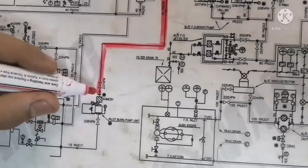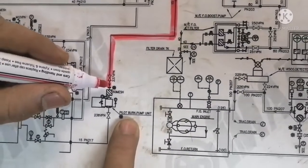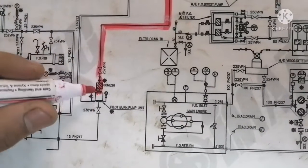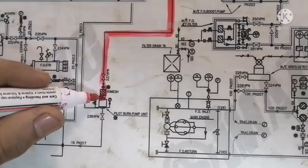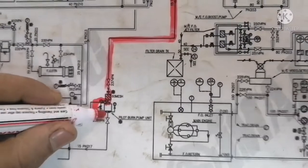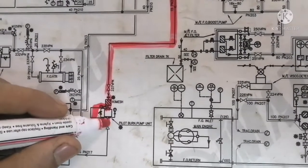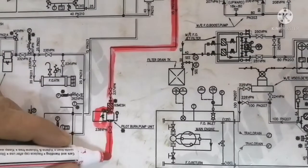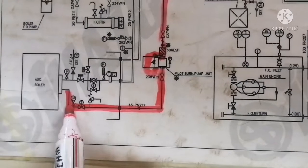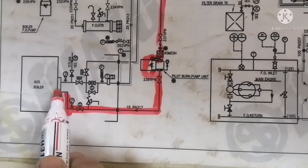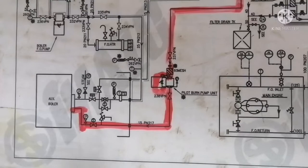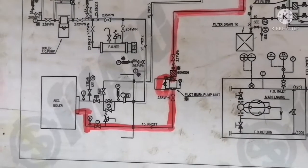This is your pilot burner pump. From the pilot burner pump, as I said, there will always be a relief oil line — it connects back to the suction line. The pump discharge will be going directly to your auxiliary boiler pilot burner.